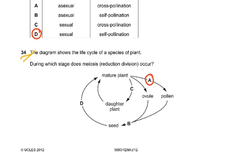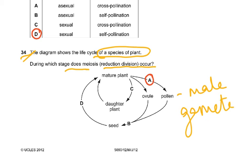Question 34: The diagram shows the life cycle of a species of plant. During which stage does meiosis reduction division occur? When the mature plant is forming the pollen, pollen is produced by meiosis because pollen is the male gamete.